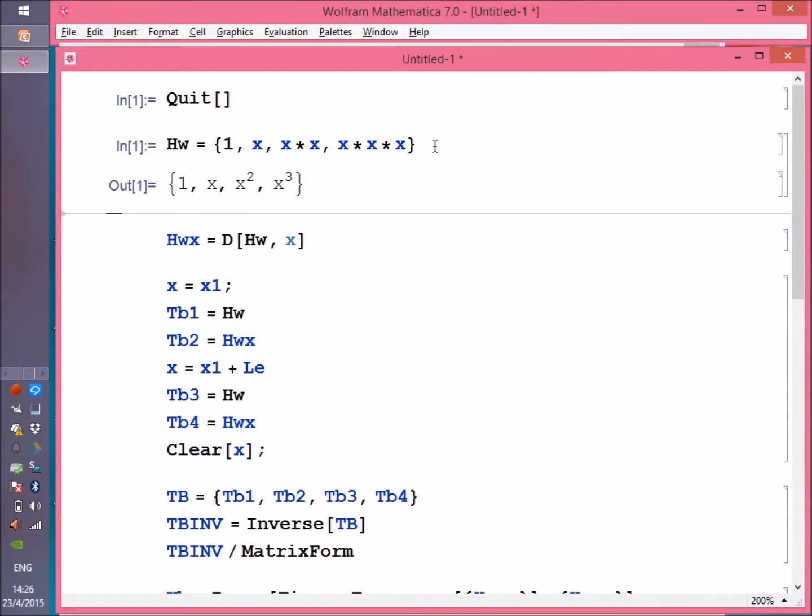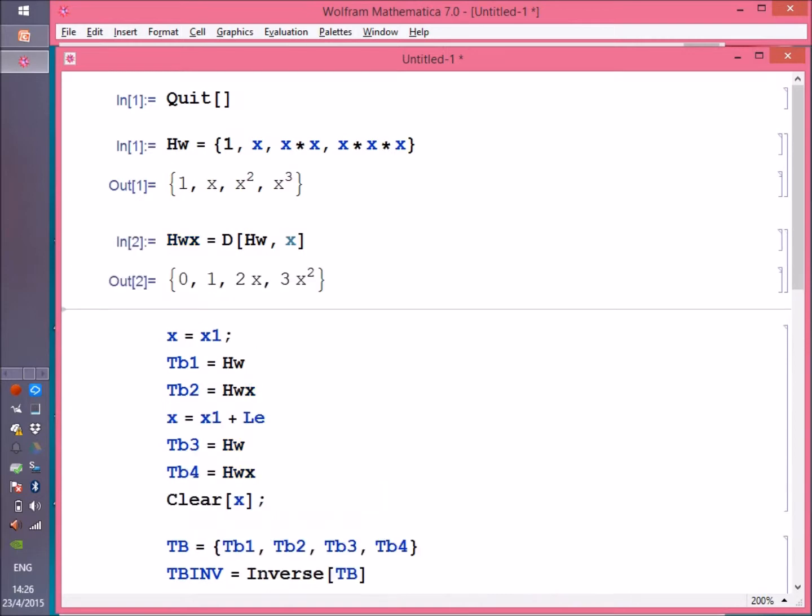Now, HW is defined as the given vector. The following step is define HWx, where HWx is the differentiation D of HW with respect to x. You get what you expected: 0, 1, 2x, and 3x squared.